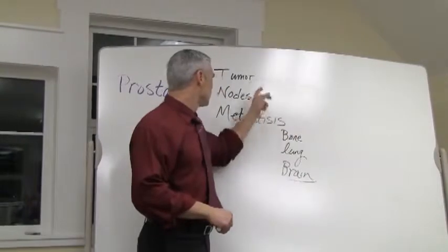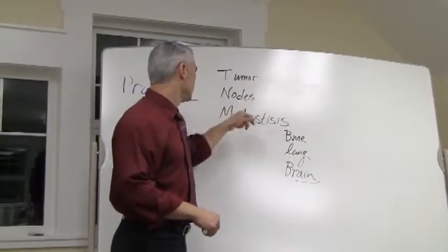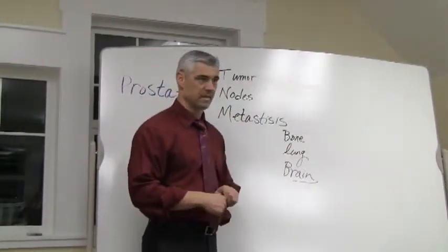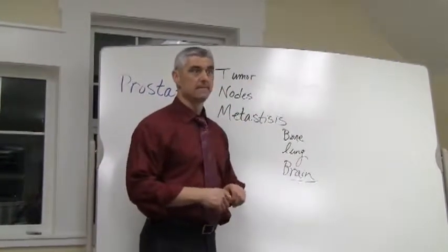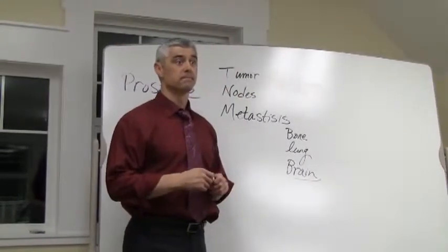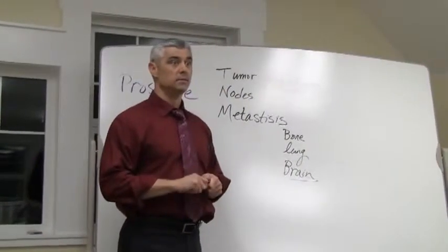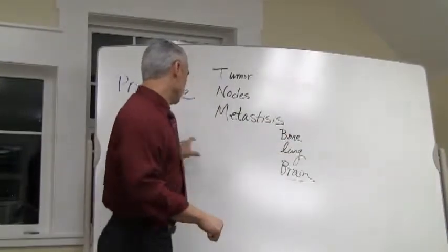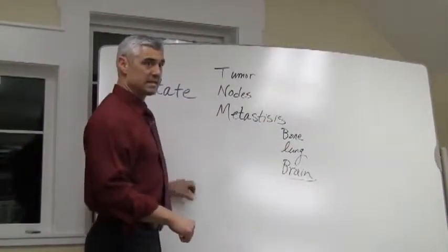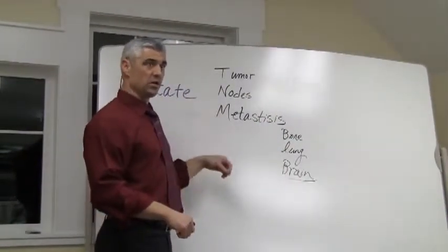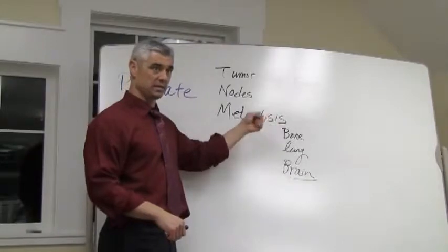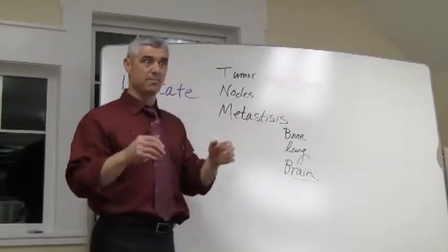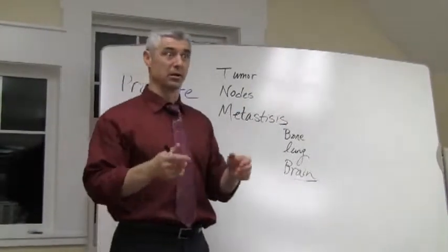When looking at metastasis from prostate cancer going to bone, lung, and brain, you can tell if it originated there or is secondary by examining the tissue. When cancer metastasizes, it usually carries that same type of cell to the new site — that metastatic tissue has the same type of appearance.